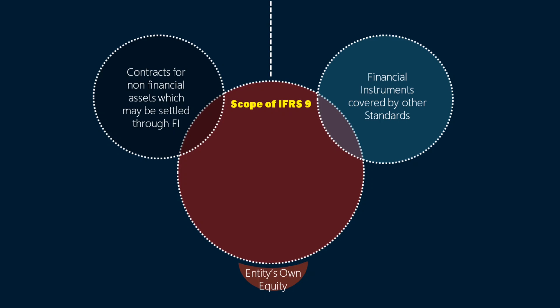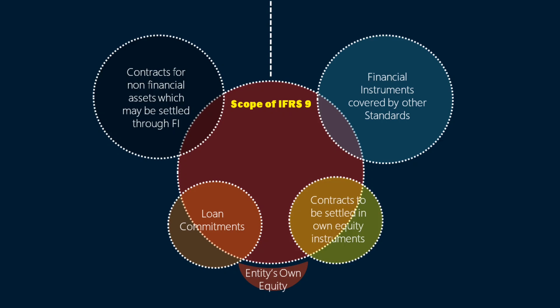There are also details about when a loan commitment would be covered under IFRS 9, and details about when contracts that may be settled in an entity's own equity instruments shall be regarded as financial assets or liabilities. Apart from these additional scope considerations, IFRS 9 is essentially a catch-all standard which deals with the accounting of financial assets and financial liabilities except those covered in other specialized standards.